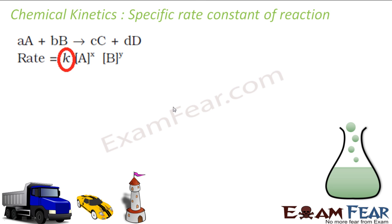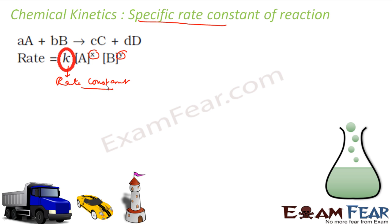Let's understand the new term called specific rate constant for a reaction. For the reaction A + B → C + D, the rate equation is K into [A] to the power X, [B] to the power Y, where X and Y are experimental values and K is the rate constant. Specific rate constant is nothing but the rate constant when the concentration of each reactant is 1 mole per liter — in that case, my rate constant becomes the specific rate constant.